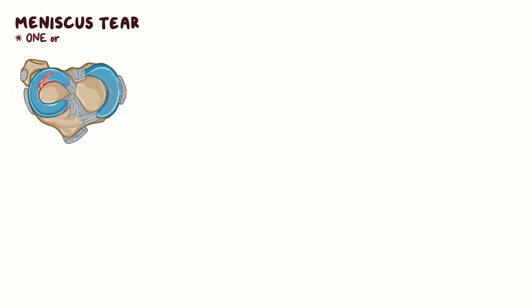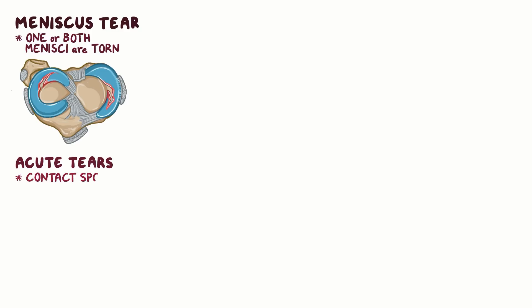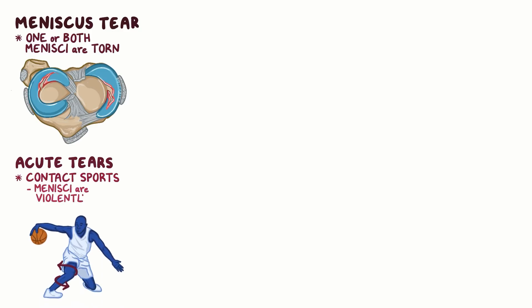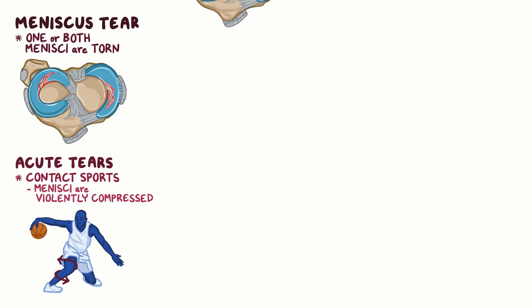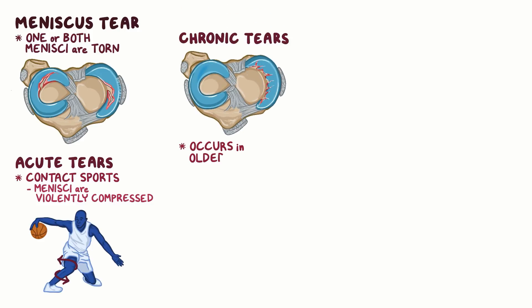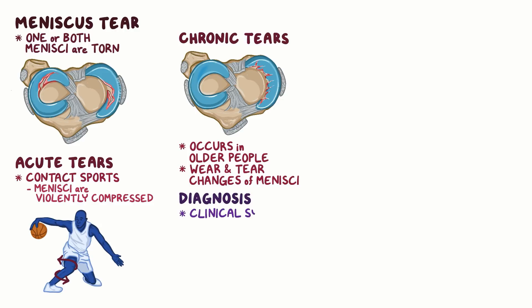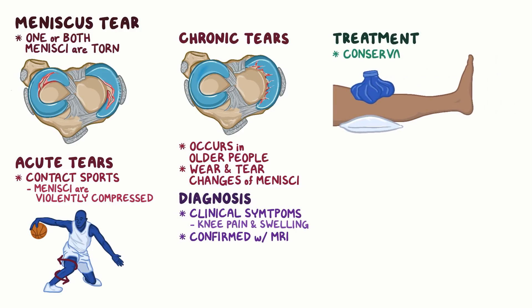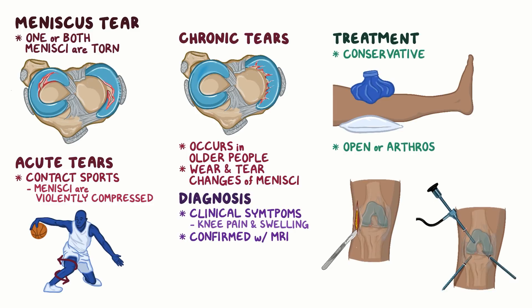As a quick recap, a meniscus tear is when one or both of the menisci of the knee joint are torn. Acute tears usually occur in athletes during contact sports when the menisci are violently compressed. Chronic tears occur in older people and are due to wear and tear changes of the menisci. The diagnosis is mainly based on clinical symptoms, like knee pain and swelling, and can be confirmed by MRI. Treatment can be conservative or by open or arthroscopic surgery.